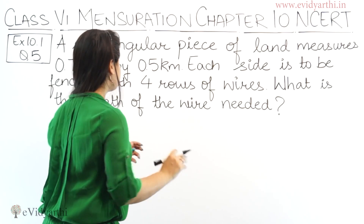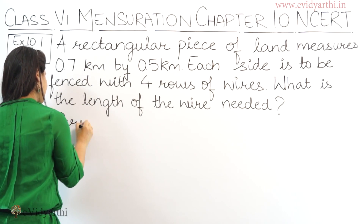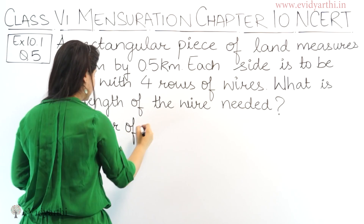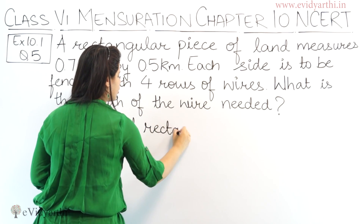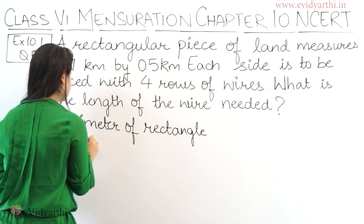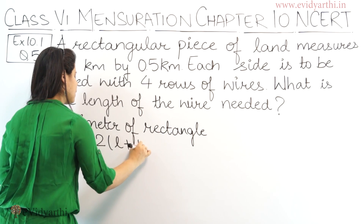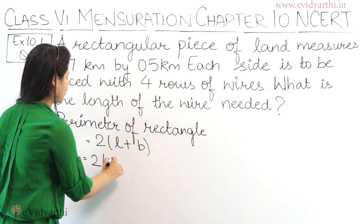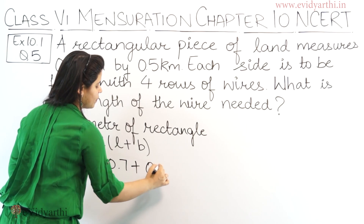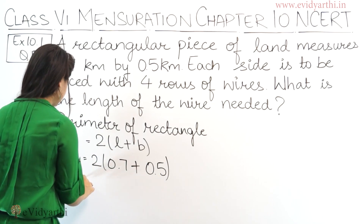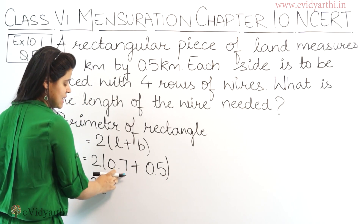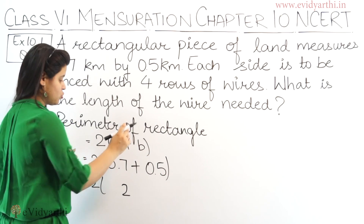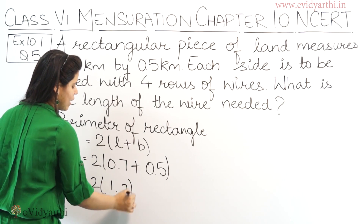So let's start. The first thing is the perimeter of the rectangle. Since a rectangular piece of land is given, we use the formula: perimeter of rectangle = 2(L + B). So this is 2 times — length is 0.7 plus breadth is 0.5. That gives us 2 times 1.2, so the perimeter is 1.2.